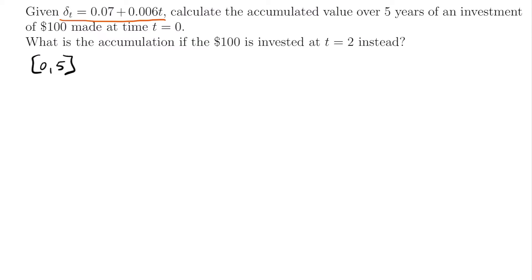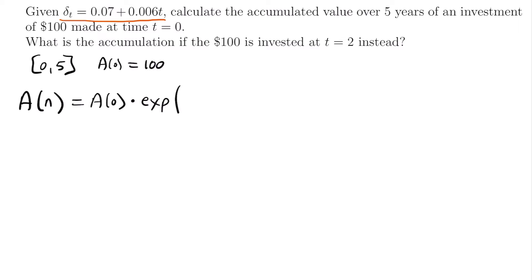We're looking at a time period from t = 0 to t = 5, and our initial investment A(0) = $100. To answer this, we need the accumulation function for a force of interest scenario: A(N) = A(0) · exp(∫₀ᴺ δ(t) dt). The 'exp' notation just means e raised to that power — it's easier to write when laying out our work. Here N = 5, since we go from zero to five years.